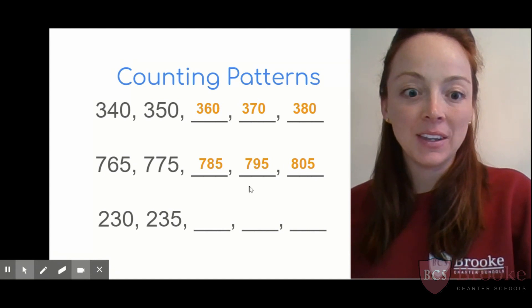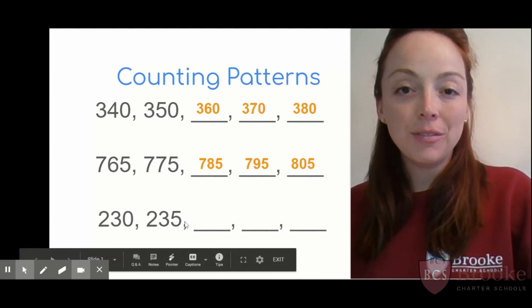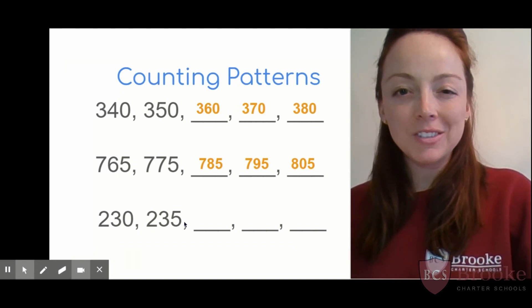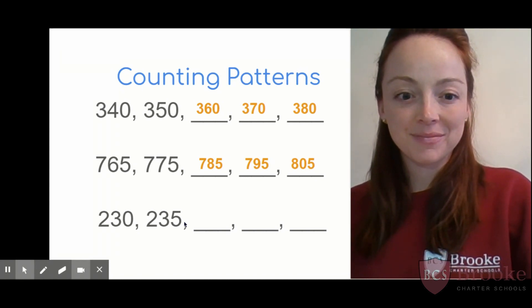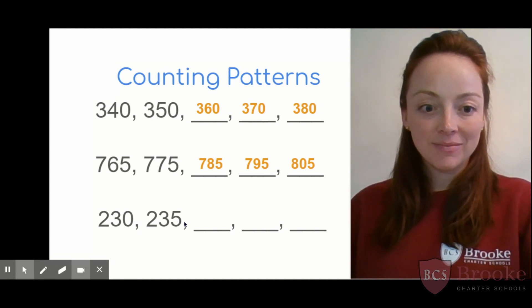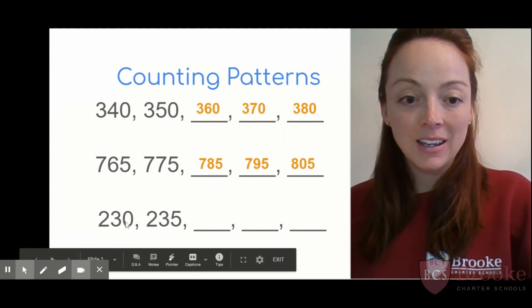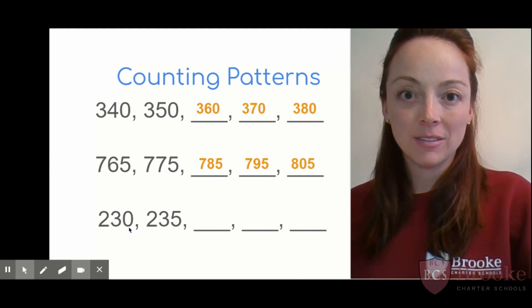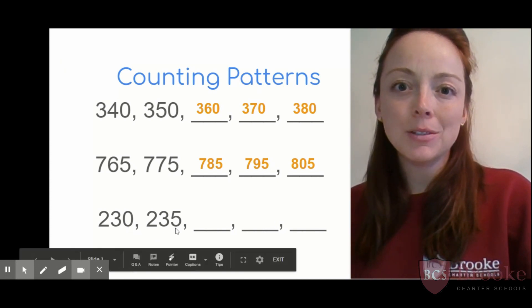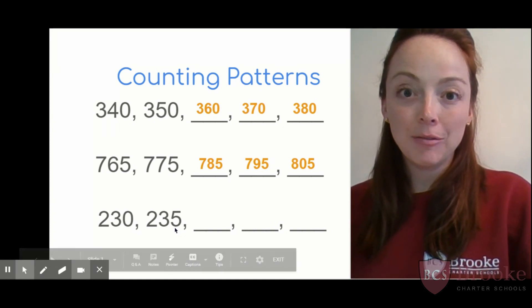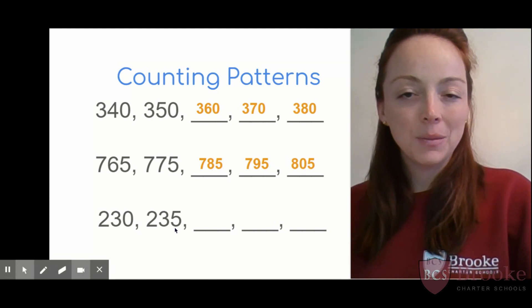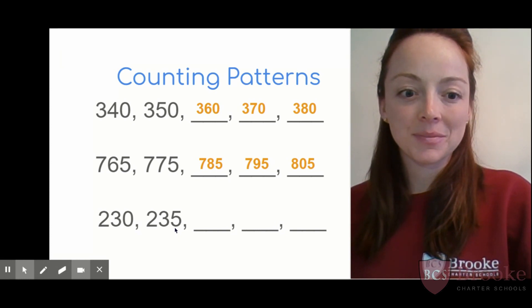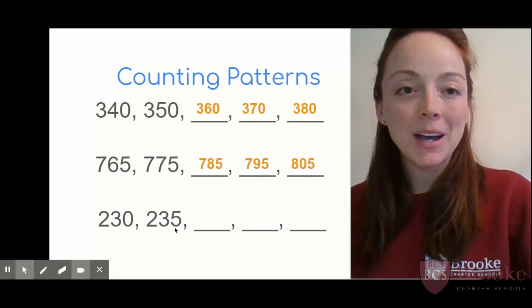Start counting with me. Get ready, go. 230, 235. Hmm, what's changing here? The ones, the tens, or the hundreds? Yeah, nice catch. It's the ones. In 230, how many ones do I have? Exactly, zero. And what about in 235? Right, five ones. So what is this pattern counting by? What does this sound like? 230, 235. What am I counting by? I think you're right, I'm counting by fives.